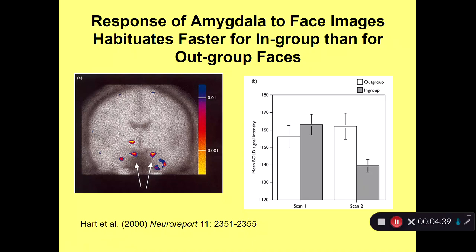Subjects were then shown the same photograph again. If it was an in-group face, the amygdala response habituated—it got less. If it was an out-group face, the amygdala response did not habituate. We would have to say that subjects found a stranger's face a little bit threatening. On a second presentation, if that face was from their in-group, they didn't feel as threatened and the amygdala response went down. If the face was from their out-group, they still felt a threat and the amygdala response was still high.